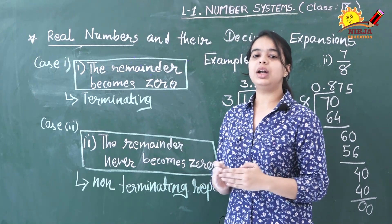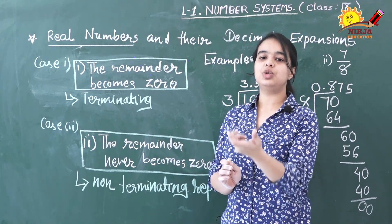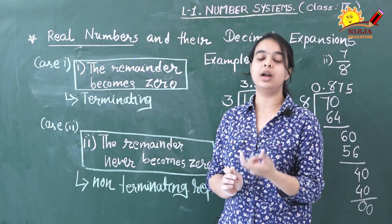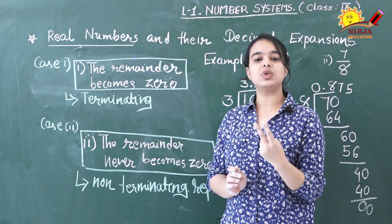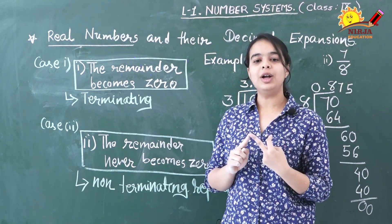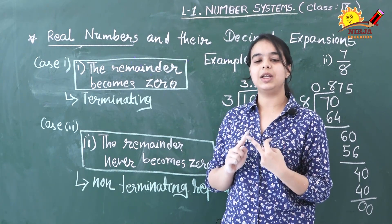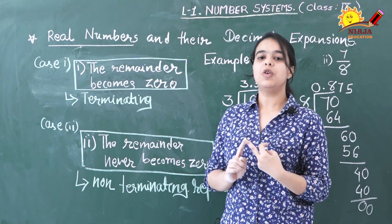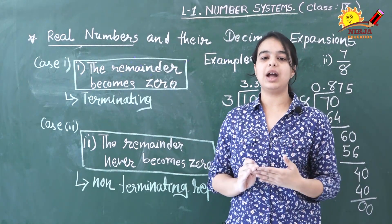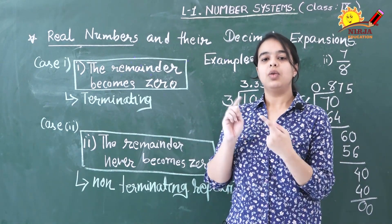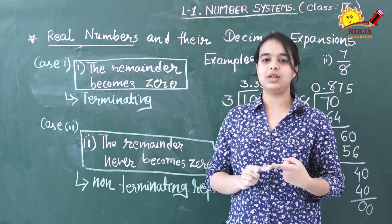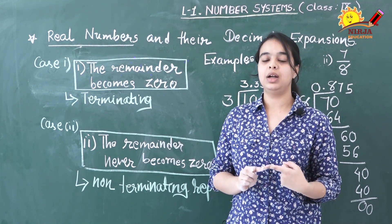We have concluded that if we do the decimal expansion of any rational number, we are going to get either a terminating decimal expansion or a non-terminating repeating decimal expansion. Looking at this board carefully will give you a clear idea of what we get after doing the decimal expansion of any rational number.